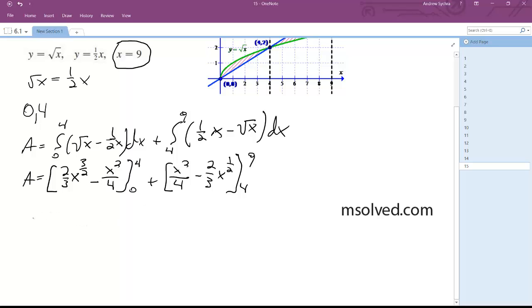Alright, so continuing on here we get 2 thirds times 4 raised to the 3 halves minus 4 squared or 16 over 4 minus 2 thirds times 0 minus 0 plus 81 over 4 minus 2 thirds 9 raised to the 1 half.